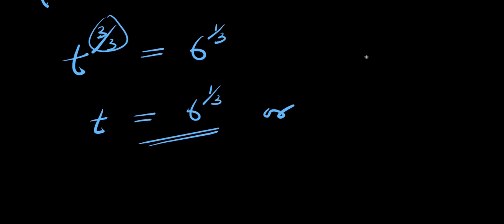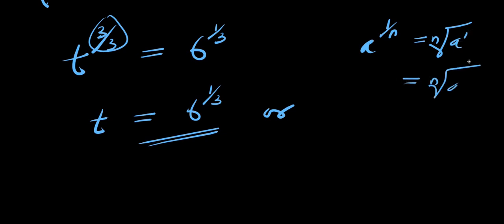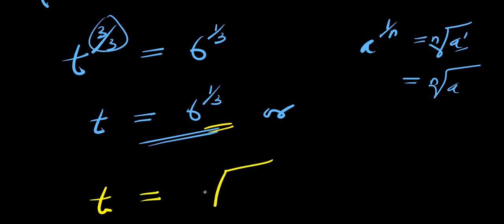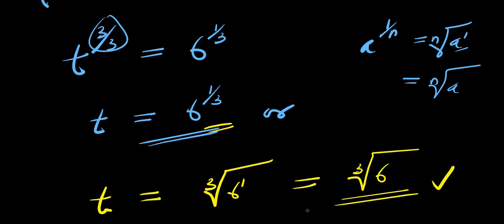We can also transform this. Using the identity: a to the power of 1 over n equals the nth root of a to the power of 1, which is the same as the nth root of a, since a to the power of 1 is a. Applying that identity here, we have t equals the cube root of 6 to the power of 1, which is the same thing as the cube root of 6. So this becomes our answer.